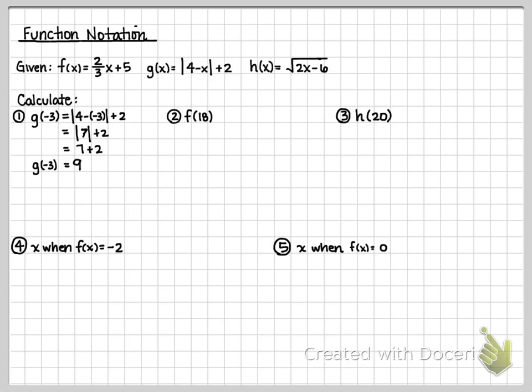The same thing with f of x. Now, on number 2, it's telling you to go to the f(x) notation. I do the exact same thing, I start writing the f function. Notice that there's an 18 in the parentheses, so everywhere I see an x, I'm going to plug in an 18. I'm going to multiply these straight across. That's going to give me 36 over 3.